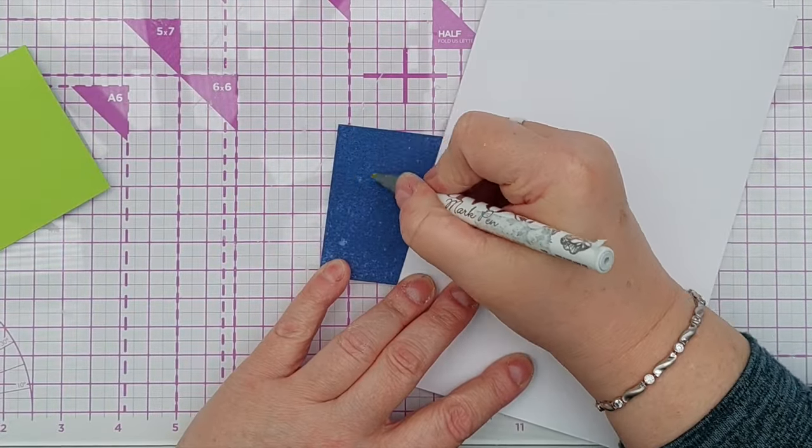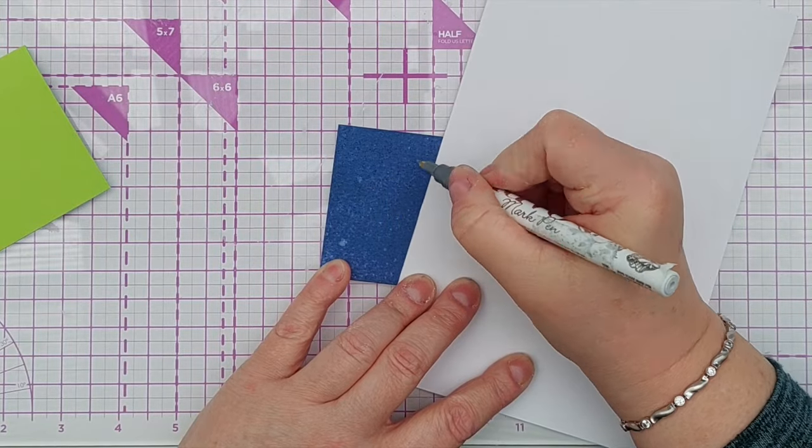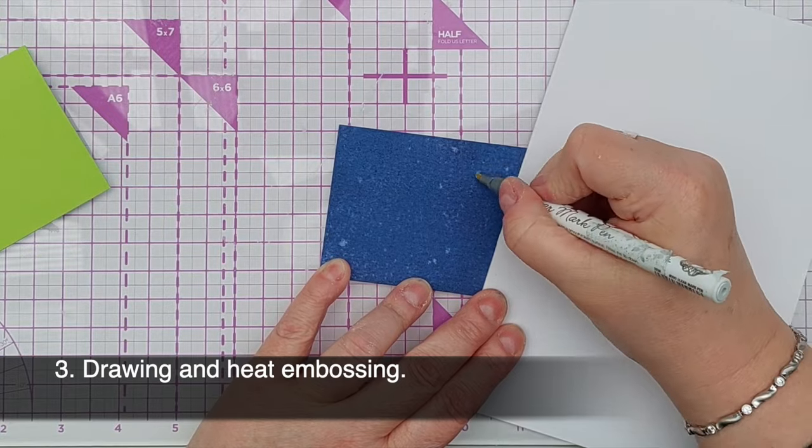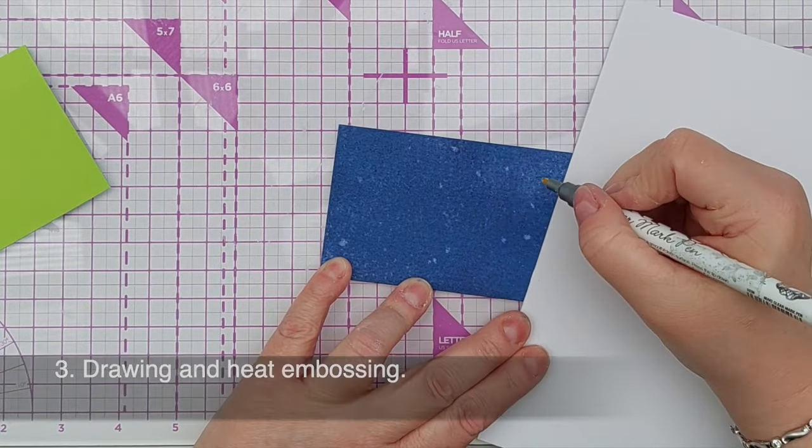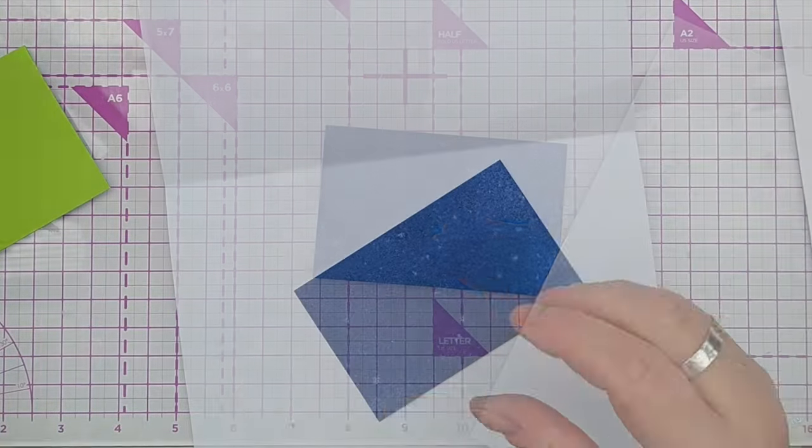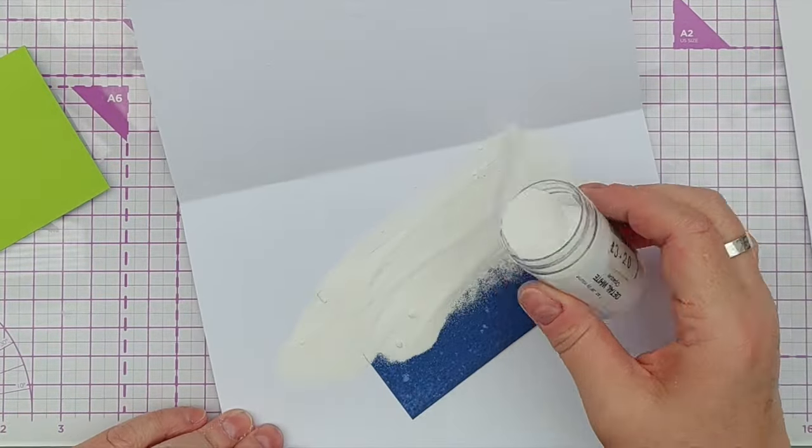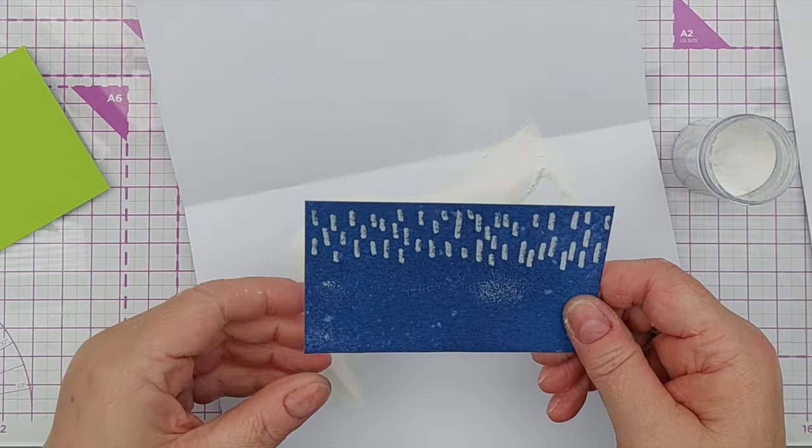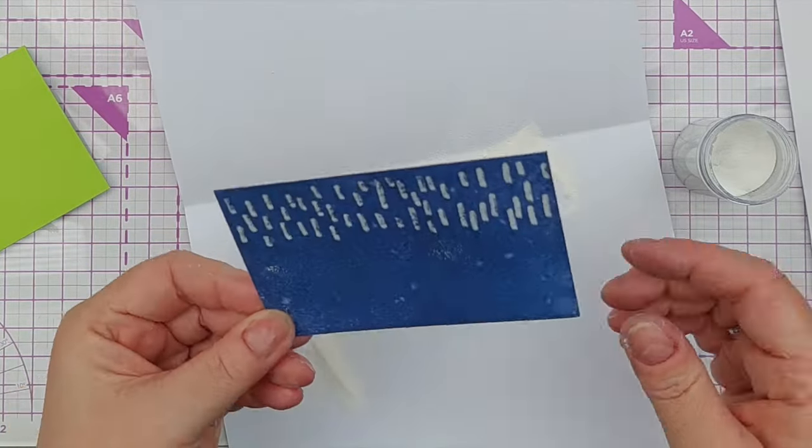Experiment number three was to use an embossing ink pen and hand draw the marks myself. I then poured embossing powder over the top and took the three panels that I had added embossing powder to and heated them with my heat tool to see what they looked like finished.